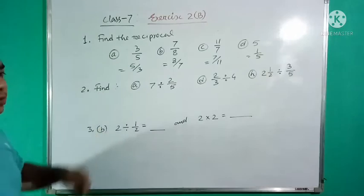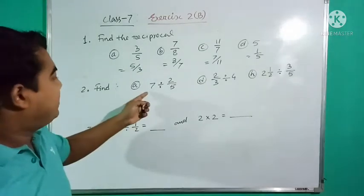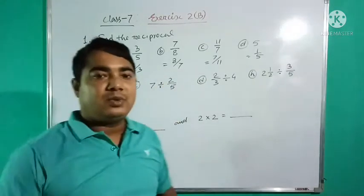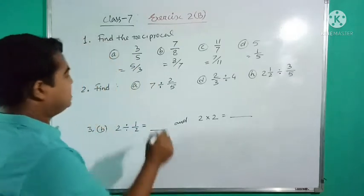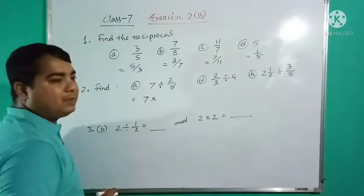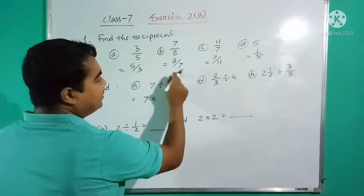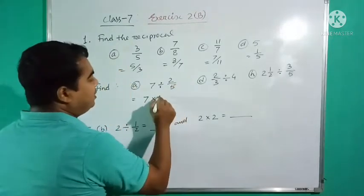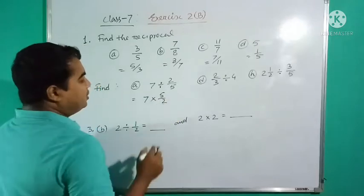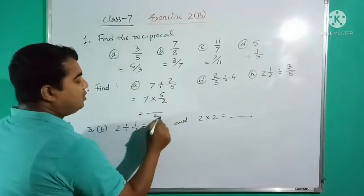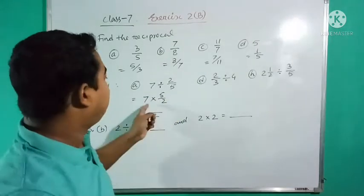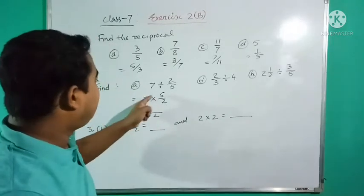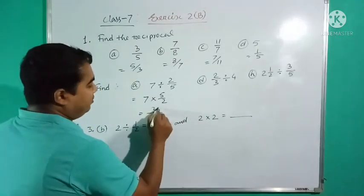Question number two: 7 divided by 2/5. We need to find this value. See, 7 divided, write as multiplication, and after divide, write this fraction as its reciprocal. 2/5 reciprocal is 5/2. So multiply numerator with numerator and denominator with denominator. 7 times 5 is 35, so 35/2 is the answer.